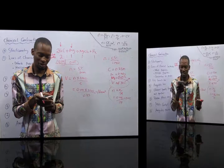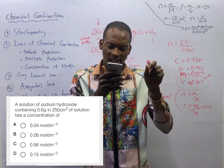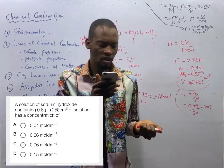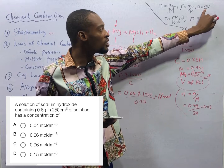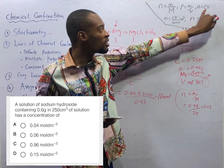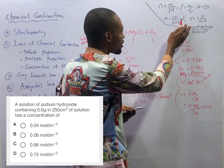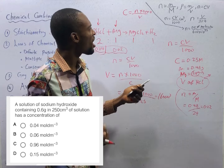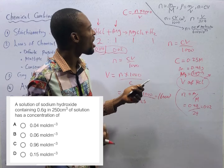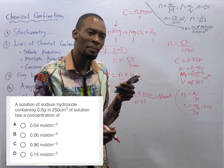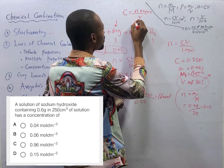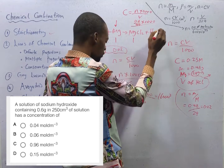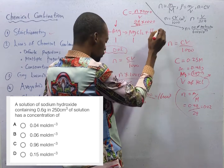A solution of sodium hydroxide containing 0.6 grams in 250 cm³ of solution — what is the concentration? Since volume is in cm³, we use the formula: concentration equals number of moles times 1000 over volume. Number of moles is mass over molar mass. The mass of NaOH is 0.6 grams; the molar mass is 40. So concentration is 0.6 over 40 times 1000 over 250, which gives you 0.06 mol/dm³.